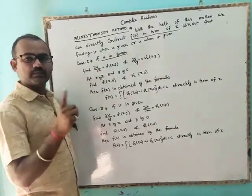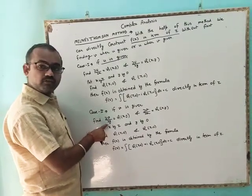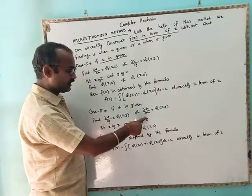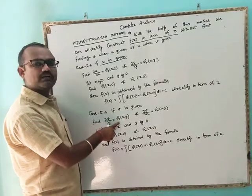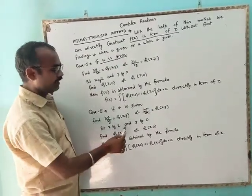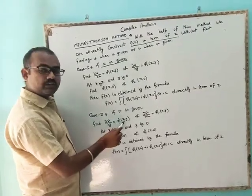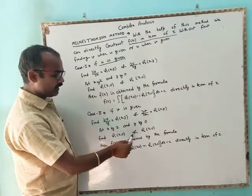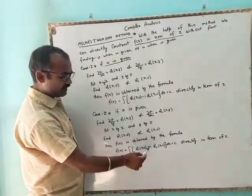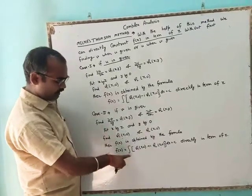This is used when u is given. Now for the second case: if v is given, we find ∂v/∂y and write it as φ₁(x, y), and ∂v/∂x written as φ₂(x, y). Then put x = z and y = 0 to get φ₁(z, 0) and φ₂(z, 0). Then f(z) is obtained by the formula: f(z) = ∫[φ₁(z, 0) + i·φ₂(z, 0)] dz + c, and we integrate with respect to z to find f(z) in terms of z.